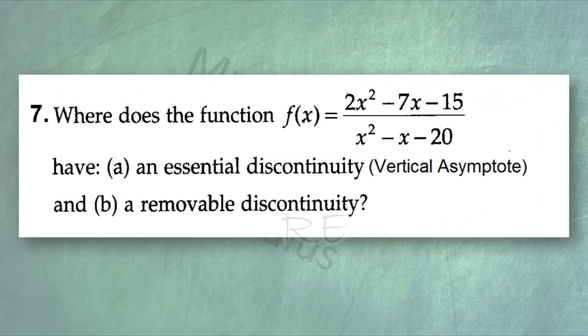Any discontinuity that's not removable, which means any place where the graph cannot be connected, is an essential discontinuity. Vertical asymptotes are a type of essential discontinuity.